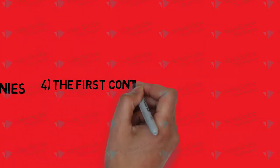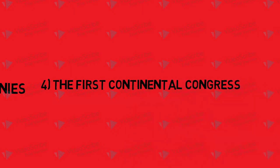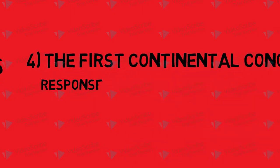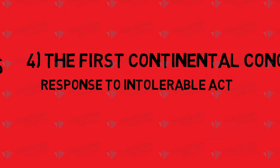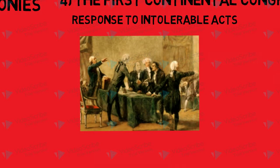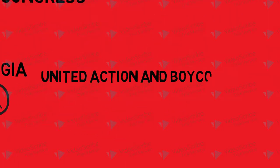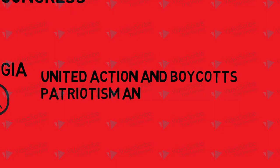Next, the First Continental Congress formed in response to the Intolerable Acts, bringing together all the colonies that make up what is today the United States — all except Georgia. They came together under one roof to discuss action, deciding on united measures like boycotts. The Congress is arguably America's first colony-wide government.